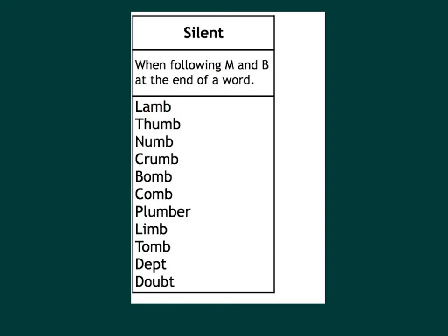Silent B: when B follows M or appears at the end of a word. Examples: lamb, thumb, lumb, crumb, balm, comb, plumber, numb, tomb, debt, doubt.